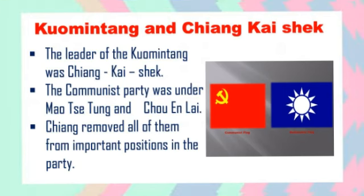After the death of Sun Yat-sen, the Kuomintang was organized on communist lines, but it did not adopt communist policies. The leader of the Kuomintang was Chiang Kai-shek, while the Communist Party was under Mao and Zhou Enlai. Chiang removed all of them from important positions in the party. The communists increased their influence among the workers and peasants and obtained recruits for their army.